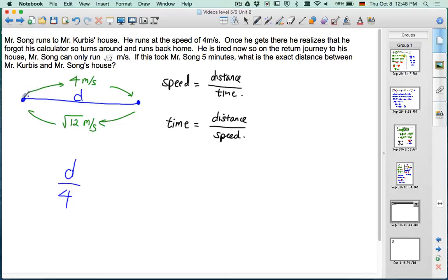That's how long it took to get here from Mr. Song's house to Kervis's house. Plus, on the way back, the same distance divided by the square root of 12. And that's 5 minutes total. So we multiply 5 times 60 to match our units up. So now we have seconds, meters per second. So when the dust settles, we'll have our answer with the units meters.